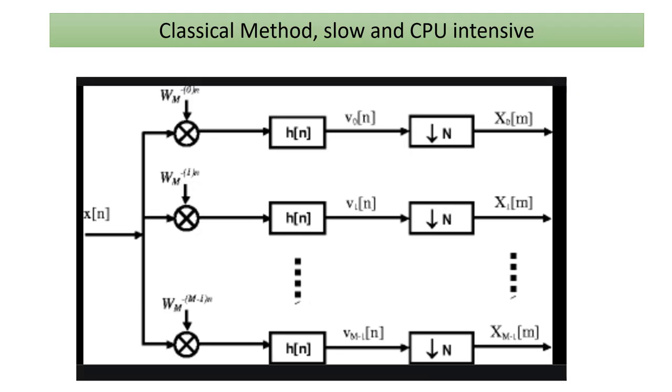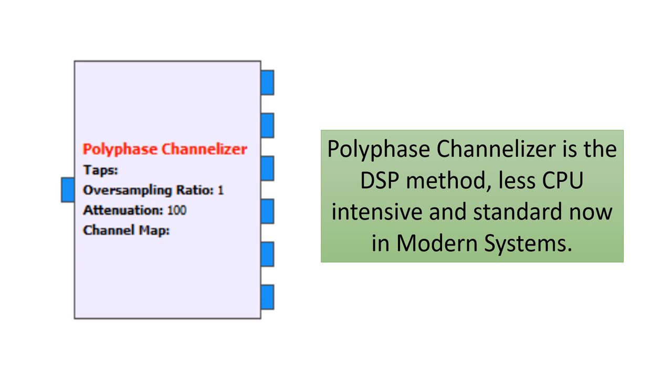So that was how I tuned in one AM station. Well, what if I wanted to tune in all five at the same time? Well, classically I would have to build something like this: x of n is the incoming data, and I'd have basically five mixers there all with discrete offsets, I'd have five low-pass filters, five decimations, and then five AM demodulator blocks. This method is slow and very CPU intensive. So is there another way to do the same thing in the DSP realm? The answer is yes, of course, and that is the polyphase channelizer.